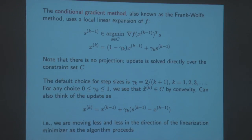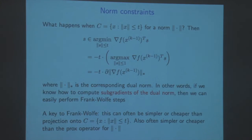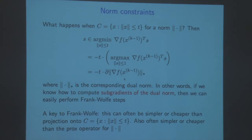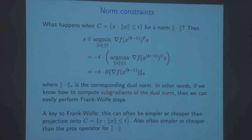The step sizes can be thought of as fixed for now, but you can do them with backtracking. With norm constraints, the Frank-Wolfe method reduces to finding a subgradient of the dual norm - that's all that's required. We find a subgradient of the dual norm, multiply by minus T, and take a convex combination. This is often cheaper or simpler than both projection onto the norm ball and the prox operator for the norm ball.